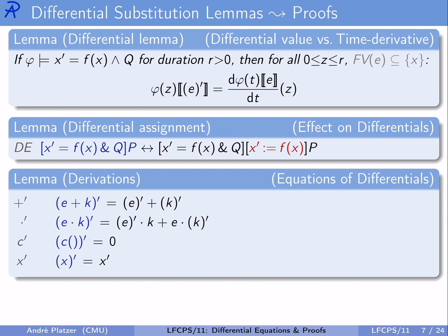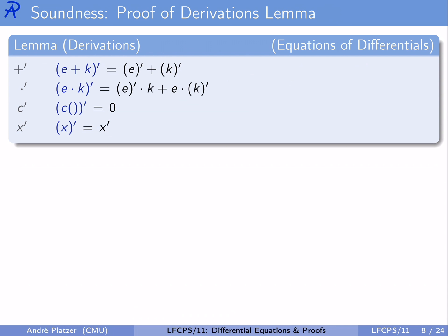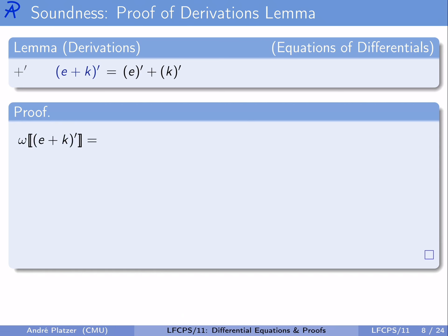We haven't yet seen the correctness proof for the derivations lemma. So why are these axioms sound? For each and every one, we still have to prove that each instance is valid — true in all states. Let's do that for the first one. We fix an arbitrary state omega and ask when an equation is true in this state: by the definition of semantics, whenever the left-hand side equals the right-hand side.